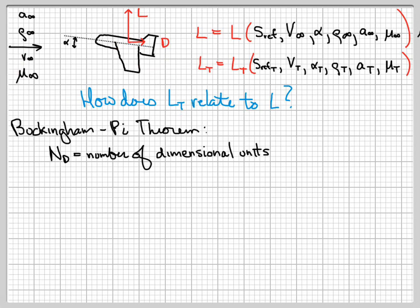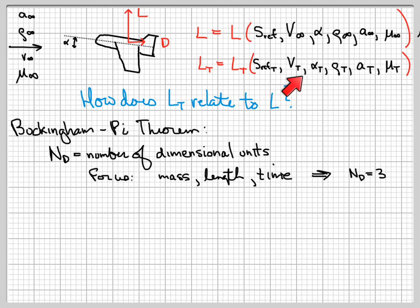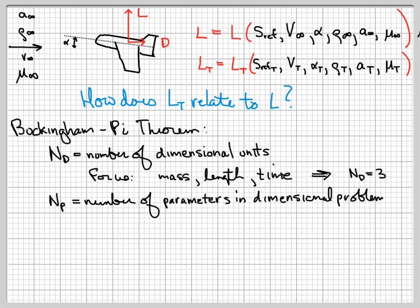The number of parameters that are the input parameters controlling the quantities I want to find — I'm going to have 6 of those, the 6 I've just listed. So np, the number of parameters in the problem, equals 6. Buckingham Pi says that any non-dimensional quantity is determined by just np minus nd non-dimensional parameters.